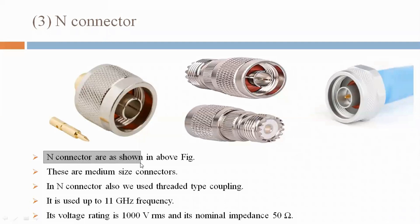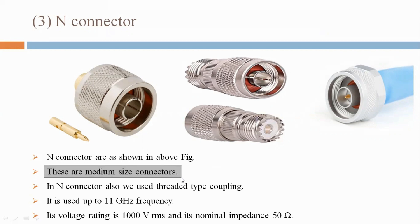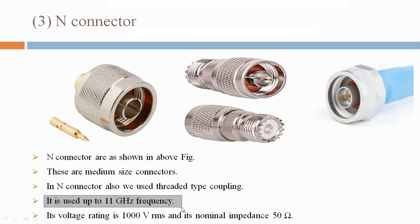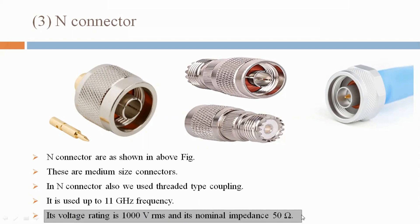N connectors are as shown in the above figure. These are medium size connectors. In N connector, threaded type coupling is also used. It is used up to 11 GHz frequency. Its voltage rating is 1000 volt RMS and its nominal impedance is 50 ohm.